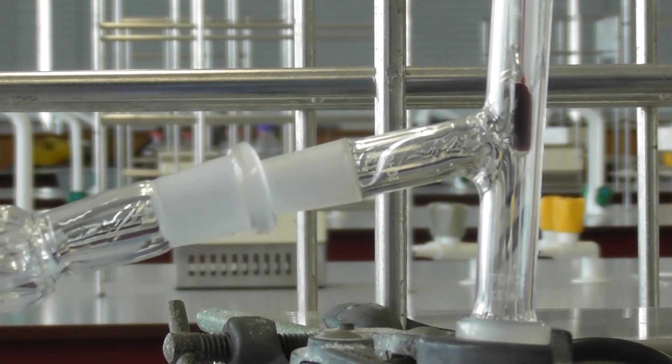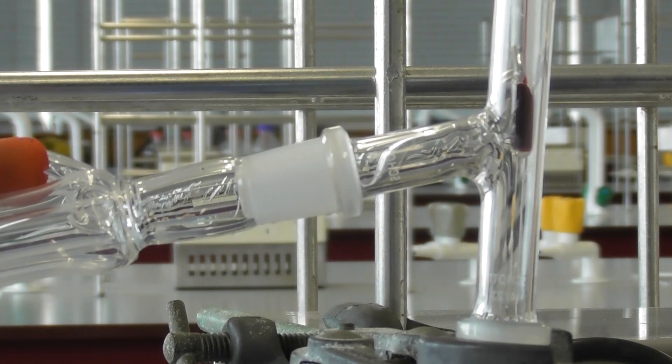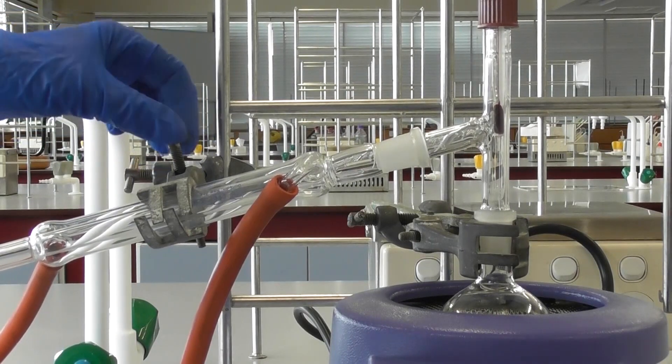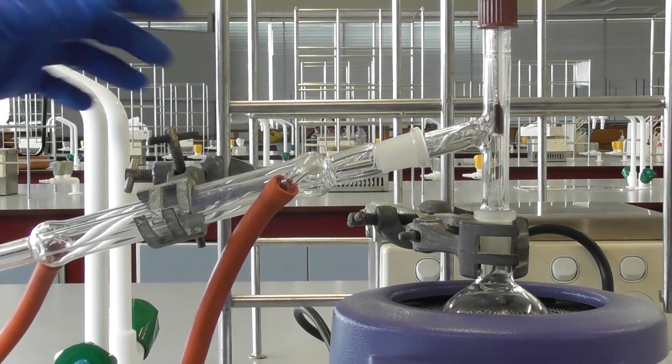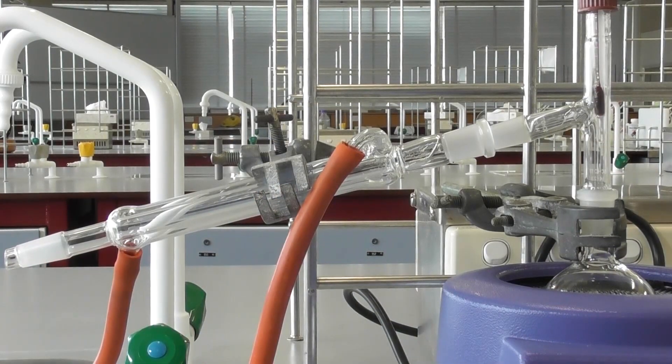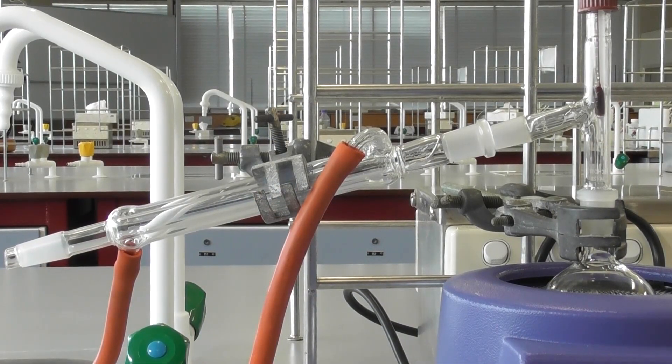When this is done, clamp the condenser in place. It will take some adjustment to position the clamp so that the condenser is held securely in the correct place. If they are not held securely, the pieces can shift and the joints will no longer prevent gases from escaping.